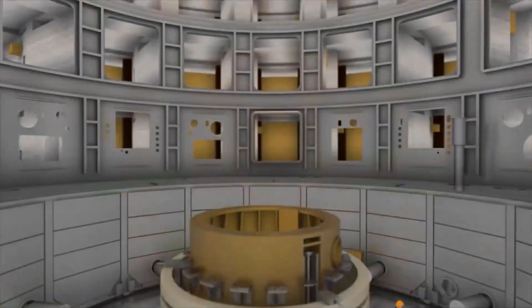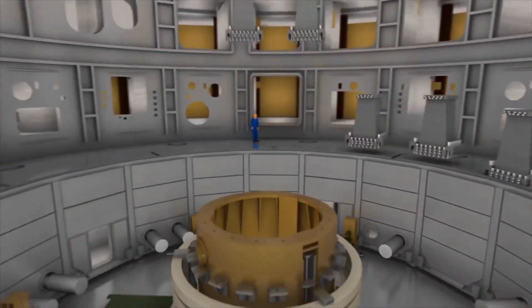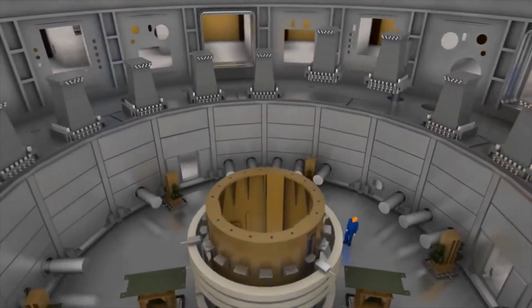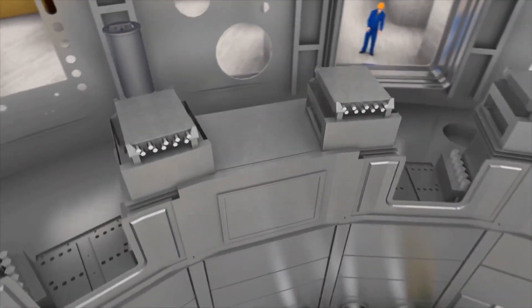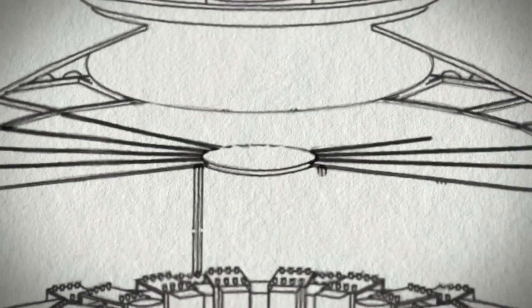Superconducting magnets are key. Fusion, the process that powers the sun and stars, involves light elements, such as hydrogen, smashing together to form heavier elements, such as helium, releasing prodigious amounts of energy in the process.